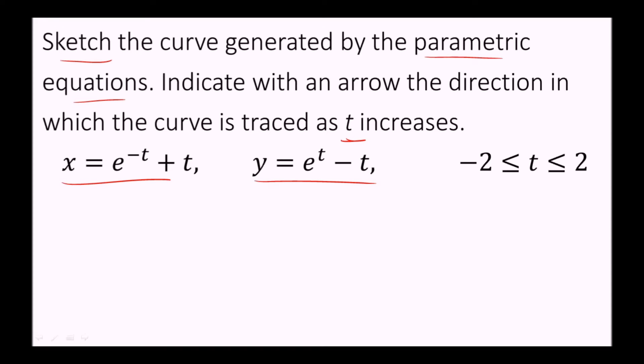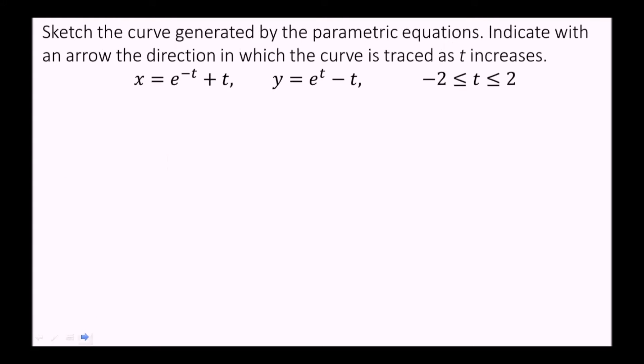So as the parameter increases from negative two to two, we want to have a directional arrow showing which way the curve is drawn. So what we want to do first with this type of problem is make a table from which we can obtain values in terms of x and y by providing values of t, the parameter.